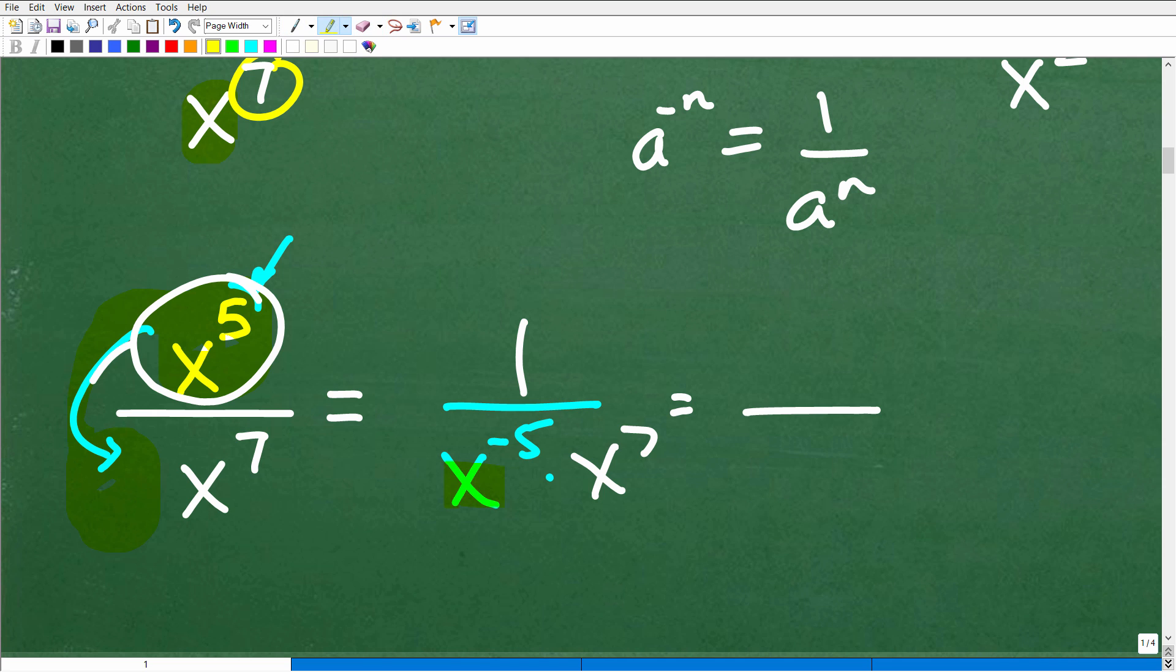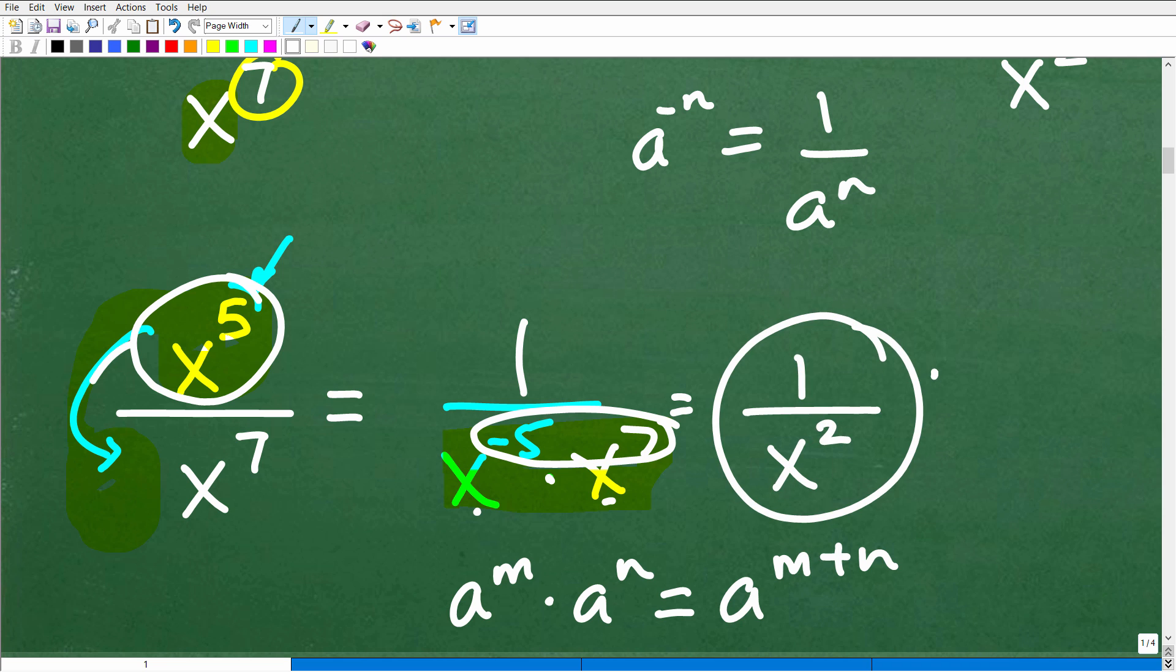So now we're going to use another property. Down here, we're dealing with multiplication of powers. These powers have the same base. So what we need to do is add the exponents. This is following the rule a to the m times a to the n is equal to a to the m plus n. So when you have the same base, you're going to add exponents. So negative five plus seven is going to be two, x squared. So now we have one over x squared.